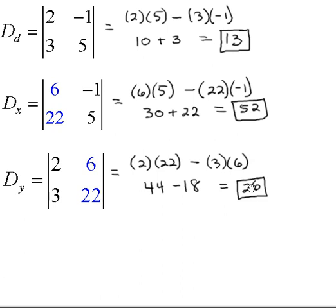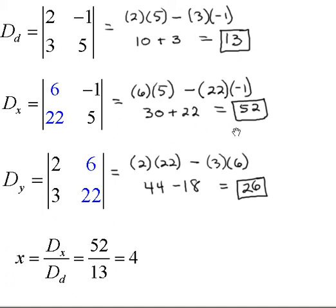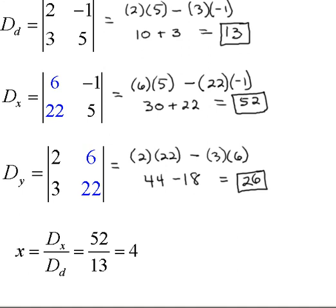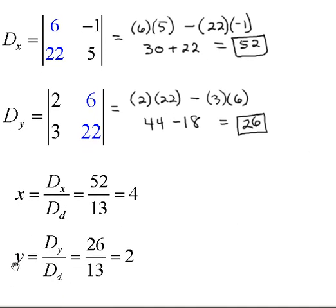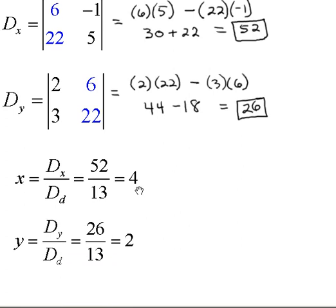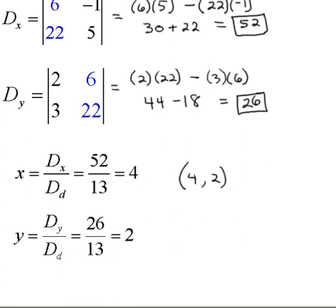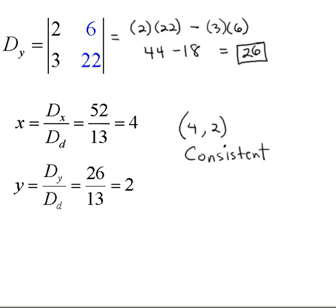Let's put these three pieces together. For x, we take the numerator of x — 52 — over the denominator 13, and that reduces to 4. For y, we take the numerator of y — 26 — over the denominator 13, and 26 divided by 13 is 2. So our ordered pair is the point (4, 2). We have a solution, so it's consistent. Since the solution is one point, it's independent.